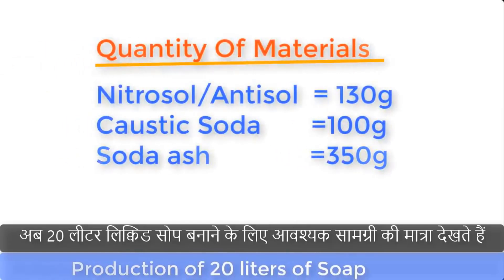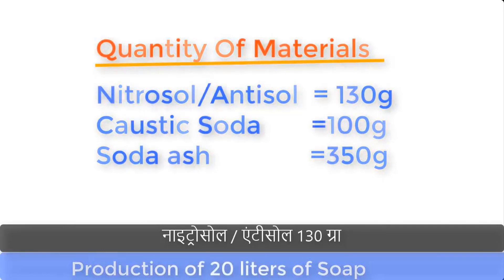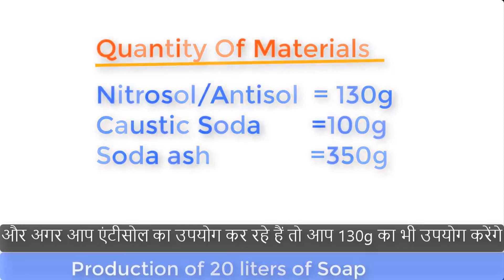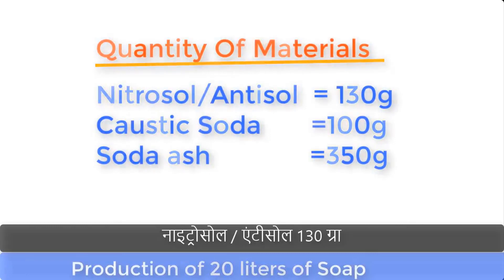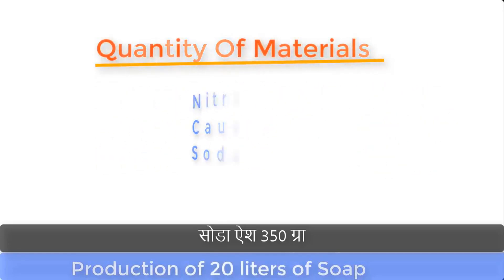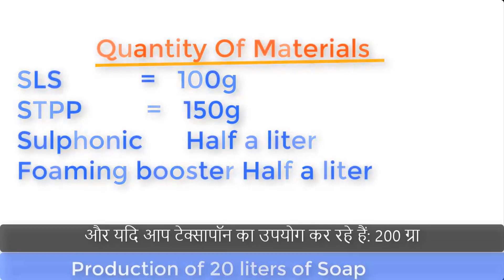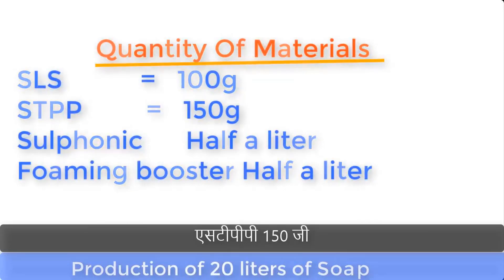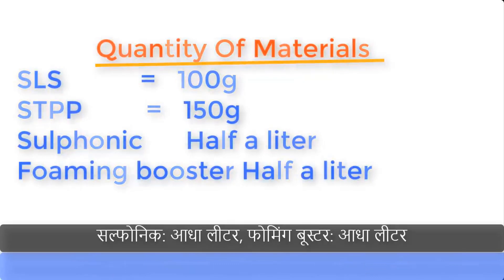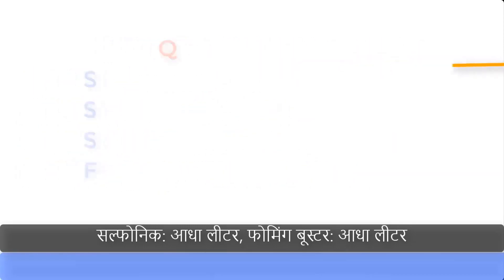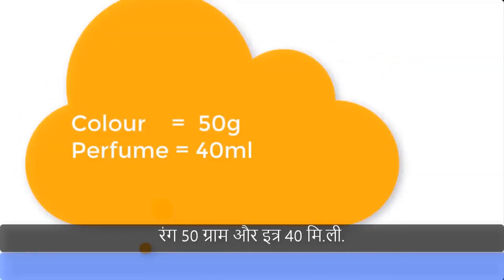Now let's see the quantities required to produce 20 liters of liquid soap. Nitrosol or antisol: 130 grams. Caustic soda: 100 grams. Soda ash: 350 grams. SLS: 100 grams — or if using texapone, 200 grams. STPP: 150 grams. Sulfonic: half a liter. Foaming booster: half a liter. Color: 50 grams. Perfume: 40 ml.